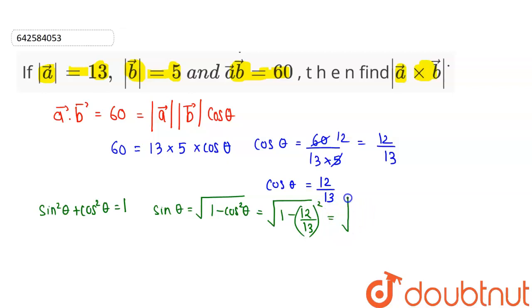Equal to under root of, so after taking LCM, LCM would be 169 and the numerator it will be 169 minus 144. So this is equal to under root of, so 169 minus 144 is 25 divided by 169.